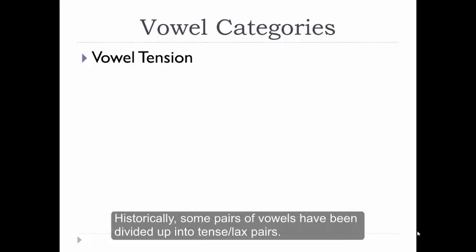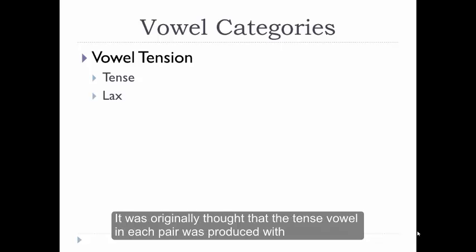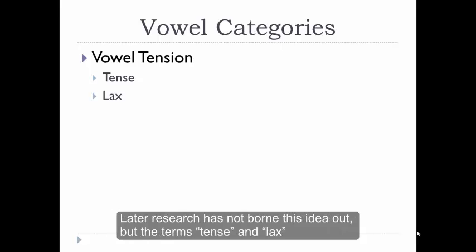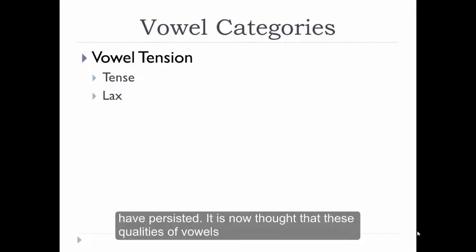Vowel tension is another dimension that should be addressed. Historically, some pairs have been divided up into tense-lax pairs. It was originally thought that the tense vowel in each pair was produced with actual extra-muscular effort, or tension, in the tongue. Later research has not borne this idea out, but the terms tense and lax have persisted.